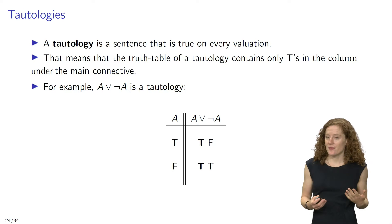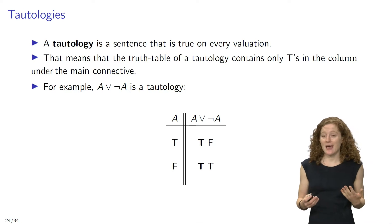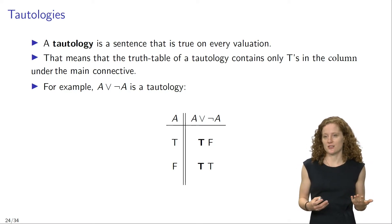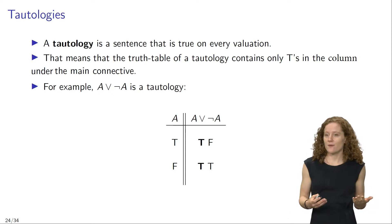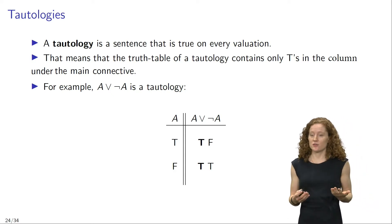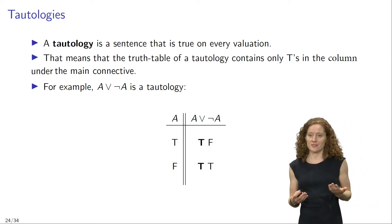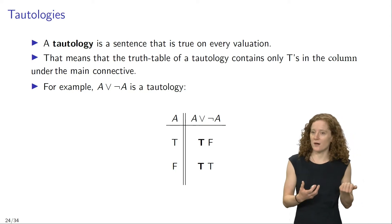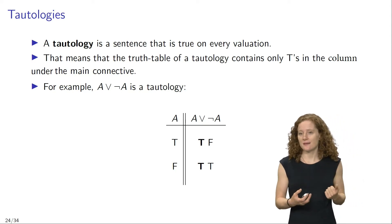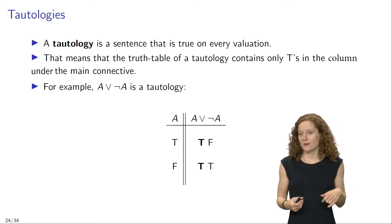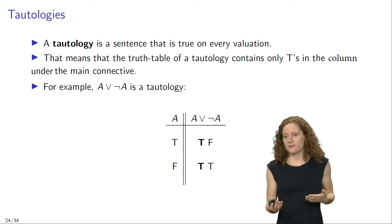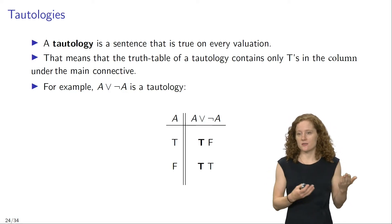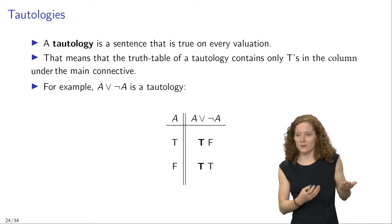For example, the sentence 'a or not a' is a tautology. Here at the bottom of the slide you see the truth table for this sentence. Since we have only one atomic sentence, a, this truth table has two rows. We see that 'not a' is false when a is true, and true when a is false.